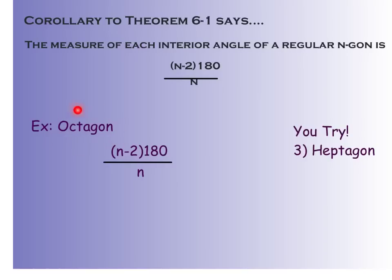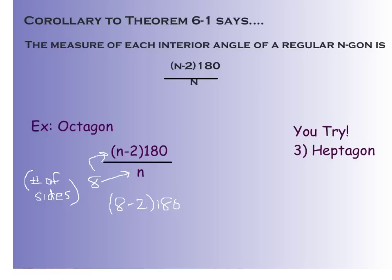For my first example, I'm looking at an octagon. I'll plug in 8 for n, because that's my number of sides. So I get 8 minus 2 times 180, divided by 8. That's 6 times 180 divided by 8. Using my calculator: 6 times 180 equals 1080, divided by 8 equals 135 degrees. So each of my 8 angles within that octagon measures 135 degrees.